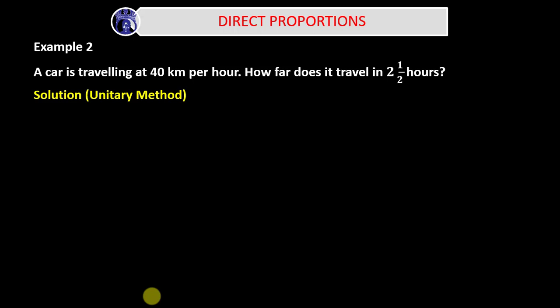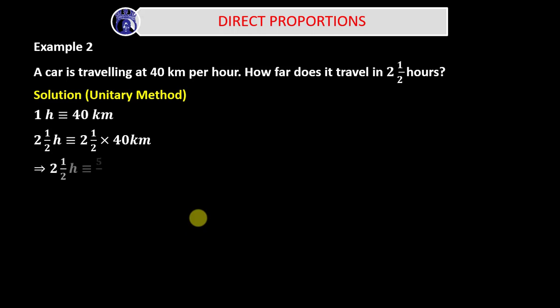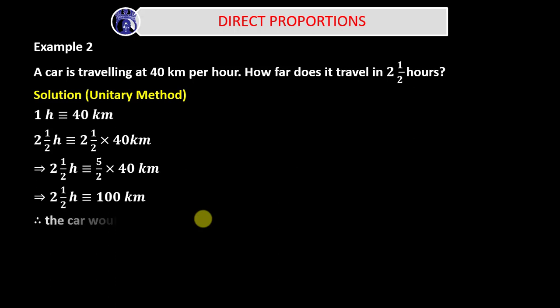Let's focus on the unitary method as our second approach to this same question. In one hour the car travels 40 kilometers, so in 2½ hours it will travel 2½ times 40 kilometers. Converting 2½ to 5 over 2, times 40 kilometers, simplifies to 100 kilometers. Therefore, the car would travel a distance of 100 kilometers in 2½ hours.